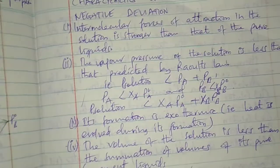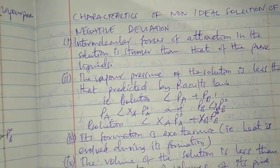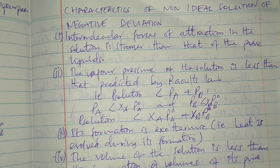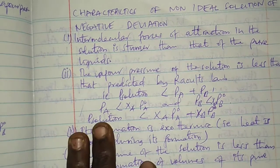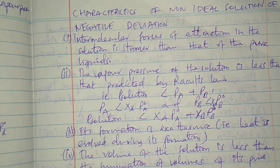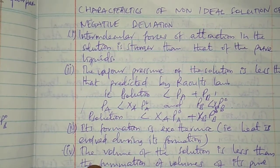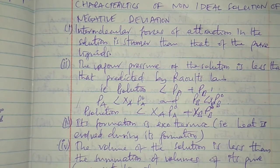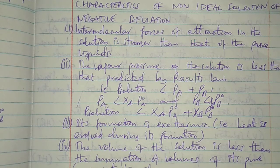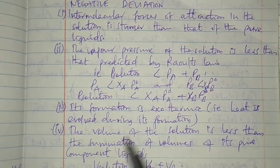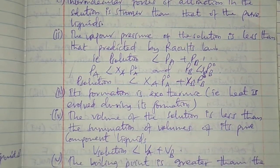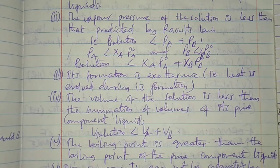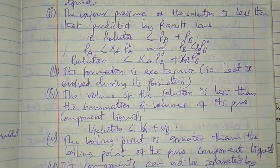Now, looking at the characteristics of the non-ideal solution of negative deviation: First, the intermolecular force of attraction in the solution is stronger compared to those in the pure liquids. Second, the vapor pressure of the solution is less than that predicted by Raoult's law. Third, its formation is exothermic. Fourth, the volume of the solution is less than the summation of volumes of the pure liquid components.